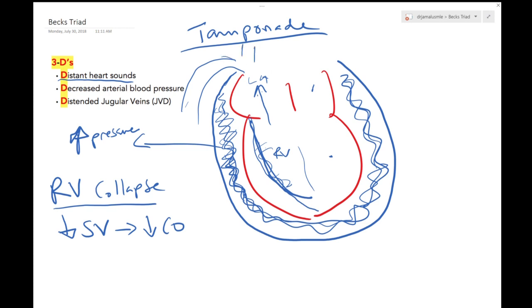Also, you're going to see that in the systemic venous system, and that signifies that you will see a JVD, or some people call it JVP, jugular venous distension or jugular venous pressure.